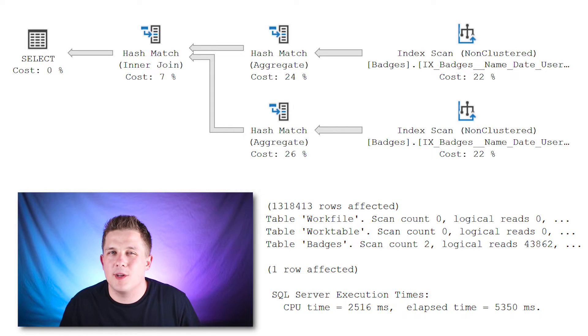Looking at our statistics IO and time again, the number of reads hasn't changed — we're still reading the whole badges table, there's no optimization we could do there by rewriting the correlated subquery to a derived table query. But because we are joining 7 million fewer rows, the CPU time is 33 percent faster — running in about two and a half seconds instead of three and a half seconds. I've run this multiple times and it's consistently about 33 percent faster. Not every correlated subquery is going to perform poorly compared to the derived table version — the SQL Server optimizer is pretty smart and in many scenarios it generates the same execution plan for both.